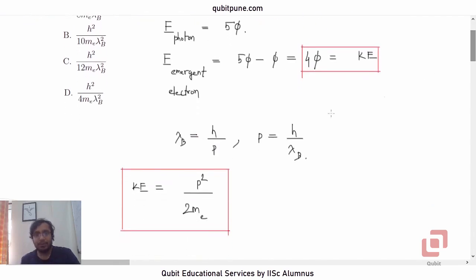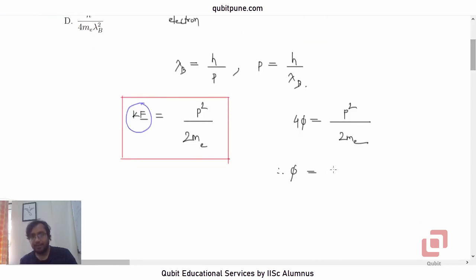So now what I am going to do is we have this 4φ here which is the kinetic energy, and that I am going to equate that with this. So pay attention: 4φ is equal to kinetic energy which is p squared by 2me. Therefore, work function φ will be p squared divided by, this four will now sit here in the denominator, so 8 into me. But what is p? P is h upon lambda b. So, let us now substitute it.